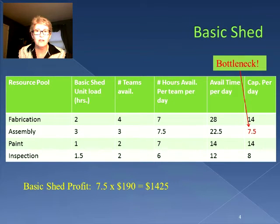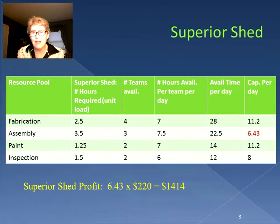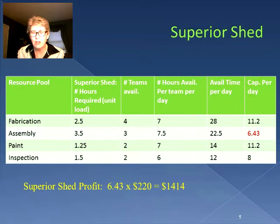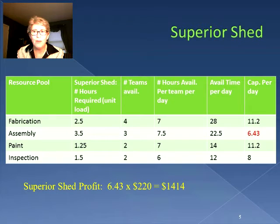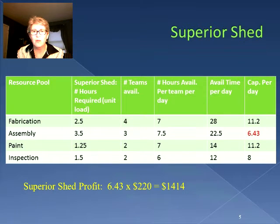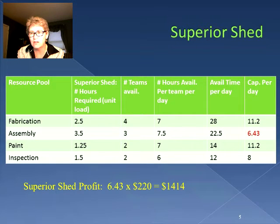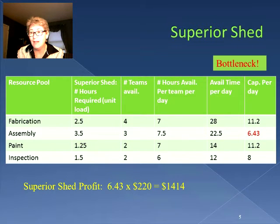Now we're going to take a look at the superior shed and do the same set of calculations, using the unit loads just for superior sheds. We still have 28 hours available per day in fabrication, 22.5 in assembly, 14 in paint, and 12 in inspection. But our capacity per day is different because our unit load is different. With 28 hours available divided by 2.5 hours needed in fabrication, we get 11.2 sheds. If we do that for each of the resource pools — fabrication, assembly, paint, and inspection — we see that the bottleneck remains in assembly.